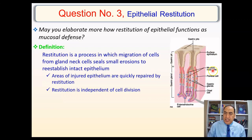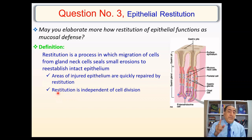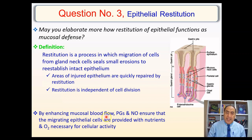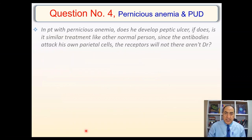The area of injured epithelium will be quickly repaired by restitution in just minutes. It's independent of cell division — the key word here is migration, not regeneration. There are two players that play a very important role in restitution: prostaglandins and nitric oxide. As we said before, nitric oxide and prostaglandin enhance mucosal blood flow, providing the migrating cells with nutrients and oxygen necessary for cellular activity.